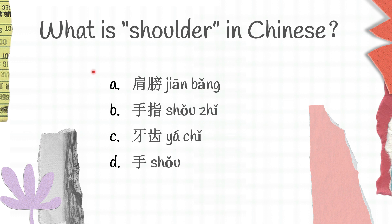The next question: what is shoulder in Chinese? We have A, jiānbǎng; B, shǒuzhǐ; C, yáchǐ; D, shǒu. Jiānbǎng is shoulder, shǒuzhǐ is finger, yáchǐ is teeth, shǒu is hand. So shoulder in Chinese is A, jiānbǎng.